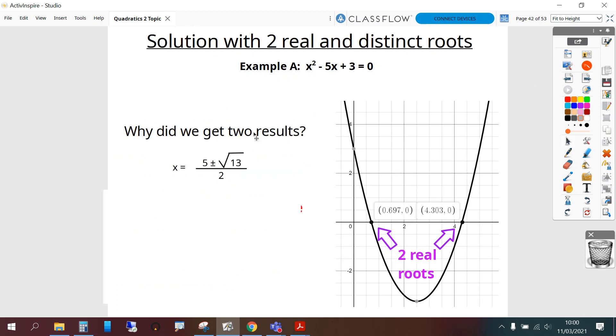But why did we get two results? The plus and minus root 13 part meant we found two solutions because we had to split the formula into two at this point. So therefore we found two real roots there and there.